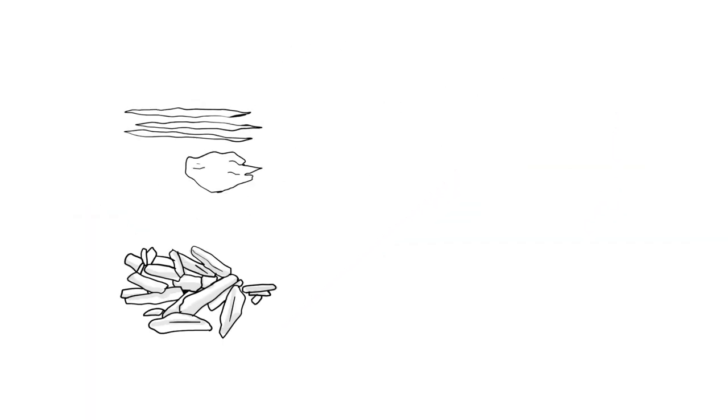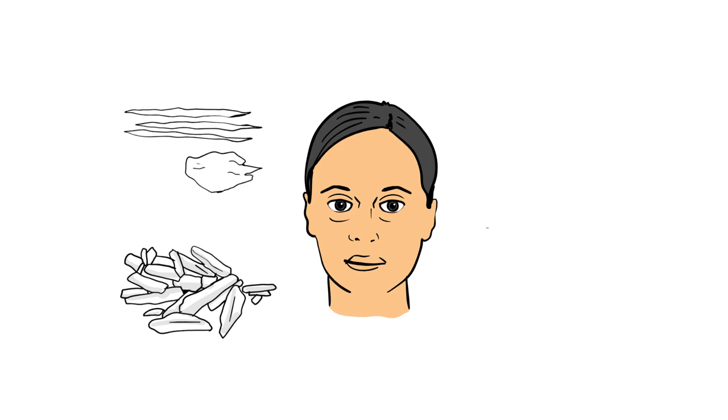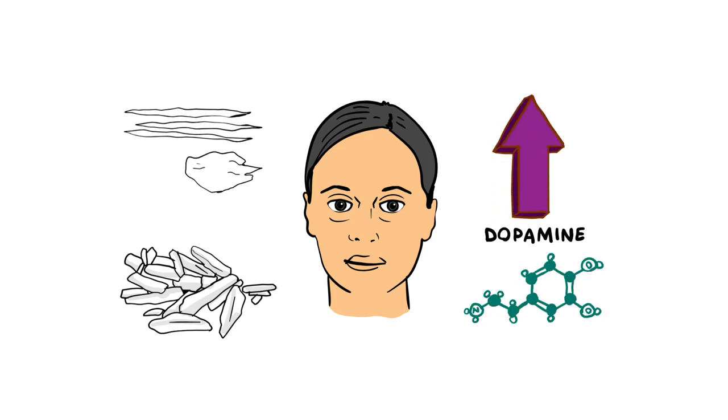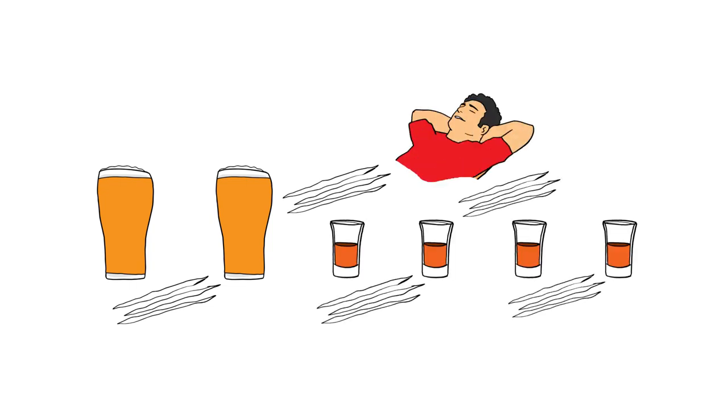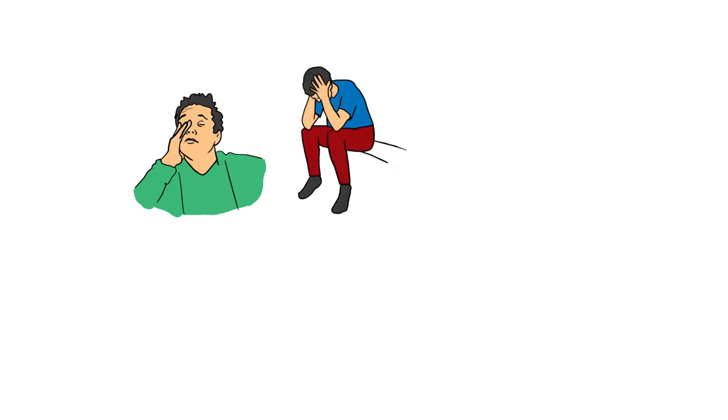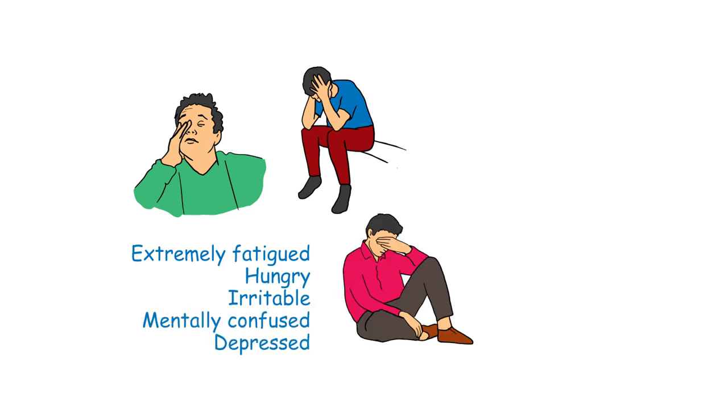Cocaine and meth, especially, produce an intense high as they rapidly flood the brain with dopamine. The high is generally fairly short-lived, however, and cocaine is often abused in a binge pattern to try and extend the euphoria. The crash that comes after a stimulant high can be significant, leaving a person feeling extremely fatigued, hungry, irritable, mentally confused, and depressed, which is followed by intense cravings.